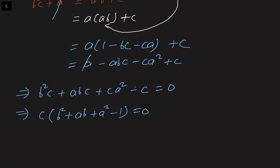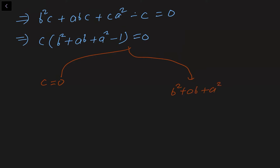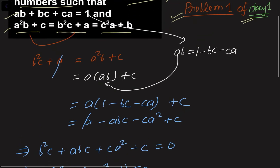From this we get two cases. Case one: C = 0. Case two: B² + AB + A² = 1. Now let's look at Case 1, when C = 0. We substitute C = 0 into the first and second equations.